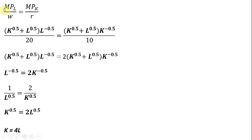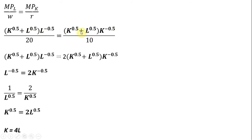To find the cost-minimizing input mix, here's our optimal condition: we're going to hire inputs up to the point that the marginal product of labor divided by the wage equals the marginal product of capital divided by the price of capital. Plugging everything in — the wage is 20, the price of capital is 10, and the marginal products we derived — gives us this equation to simplify.